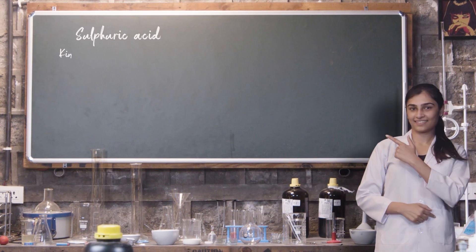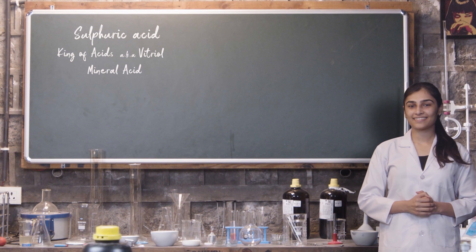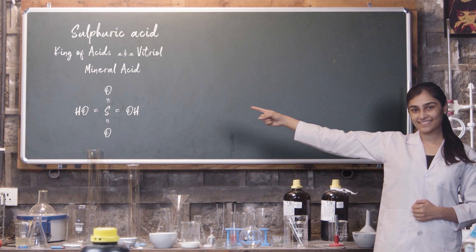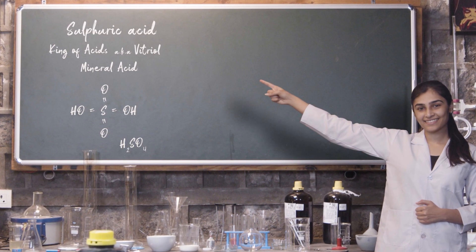Sulfuric acid was given the name king of acids, aka vitriol. This is a mineral acid which is composed of the elements sulfur, oxygen and hydrogen. Its molecular formula is H2SO4.